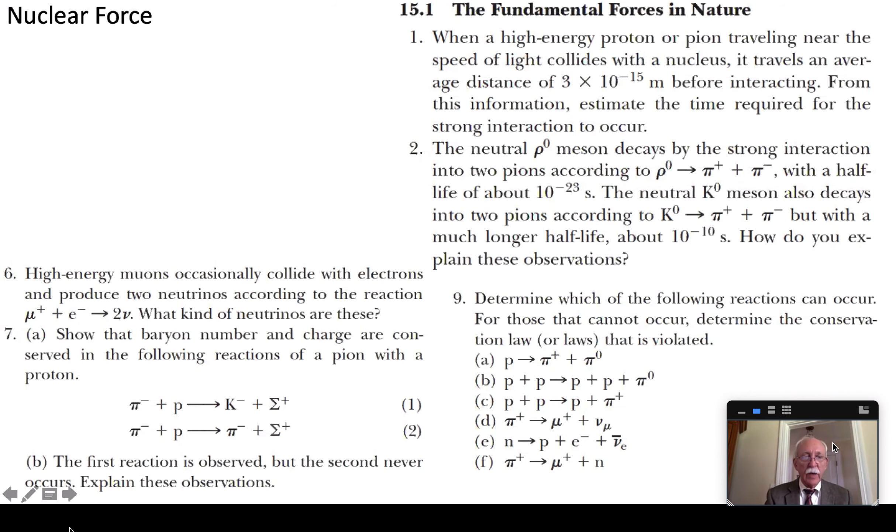All right so we've got a few minutes here. Let's take a look at a couple of problems. So the very first problem was about high-energy proton or pion traveling near the speed of light collides with the nucleus. And it travels about three femtometers before interacting. How much time does it take for the strong interaction to occur? From just from that measurement.